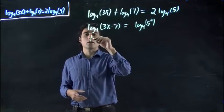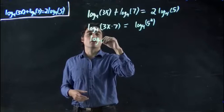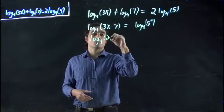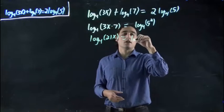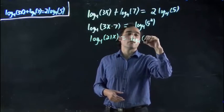And let's clean this up on both sides. We've got log 4 of 21x equals log 4 of 25.